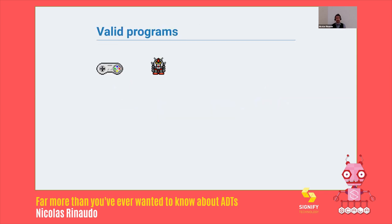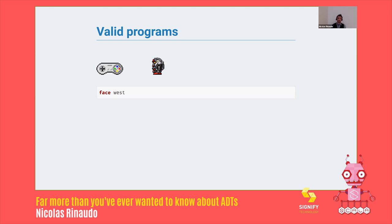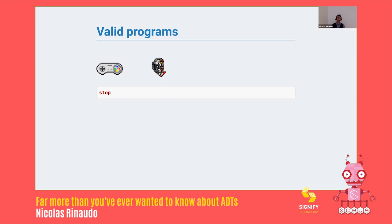So, Gundams, as we all know, are remote controlled by Super Famicom controllers. What we're going to do today is learn how to control them. Gundams receive a very, at first at least, limited set of commands. Valid programs are, for example, face north, face west, face south, face east. Then you can also ask the Gundam to start, which causes him to start walking in whatever direction it was facing at the time, and to stop, which causes him to stop. And that's all the valid programs we can send.